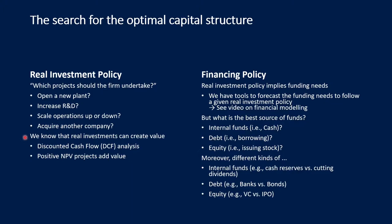A company typically has to decide about its real investment policy — that is, which projects should the firm undertake. Examples include opening a new plant, increasing research and development expenses, scaling operations up or down, or acquiring another company. Of course, real investments can create value if the net present value of those projects is positive, which we can find out by doing discounted cash flow analysis.